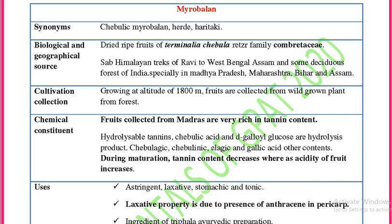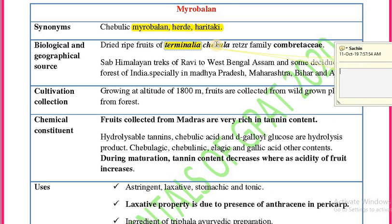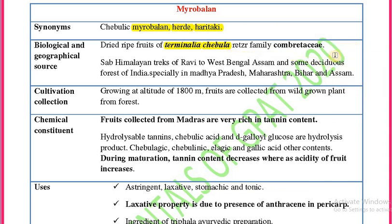The synonyms of myrobolan are Chibulik Myrobalan, also known as Haritki in Hindi. The biological source is the dried fruits of Terminalia chebula, belonging to the family Combretaceae.